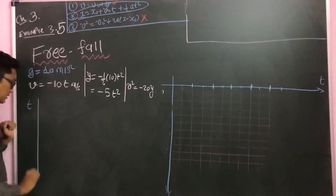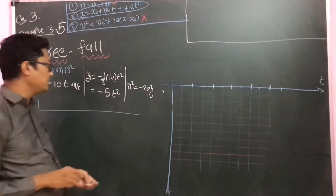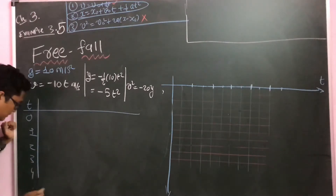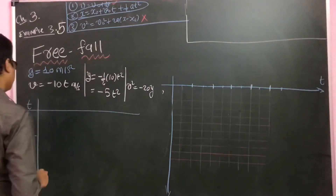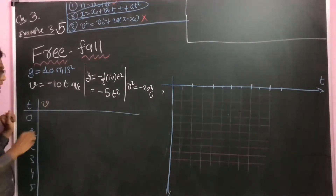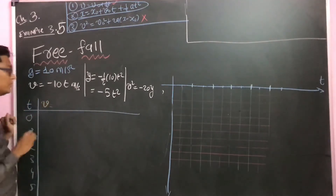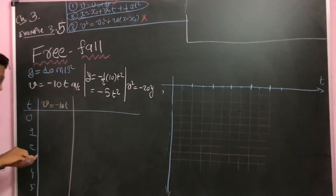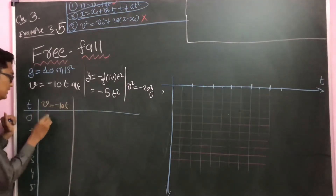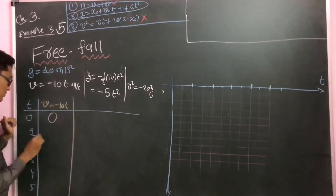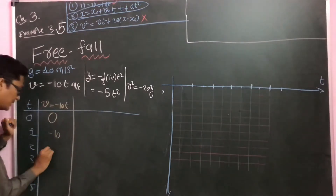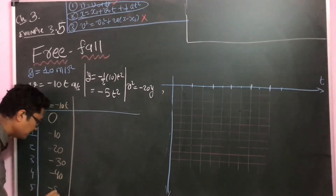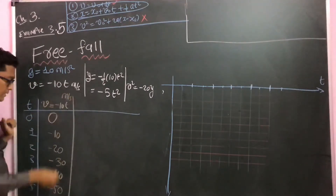Let us draw the graph of v versus t. For time values t equals 0, 1, 2, 3, 4, and 5 seconds, using v equals minus 10t: at t=0, v=0; t=1, v=-10; t=2, v=-20; t=3, v=-30; t=4, v=-40; t=5, v=-50. All values are in meters per second.